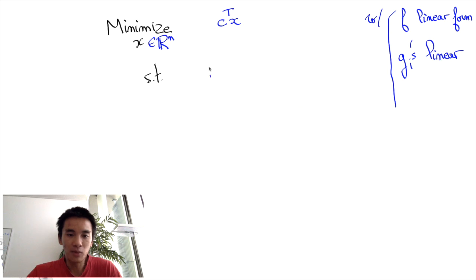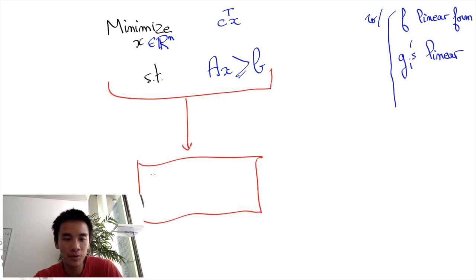Then the linear program can be written as minimize c transpose x subject to x in R^n and Ax greater or equal to b. Crucially, as soon as you have managed to write a mathematical program in this form, you can plug it into any of the many linear program solvers and the program solvers will solve your problem.